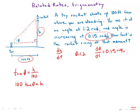I can take a derivative: 100 secant squared θ dθ/dt equals dh/dt.